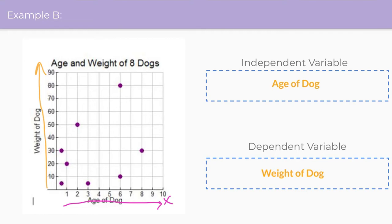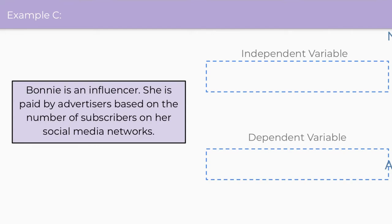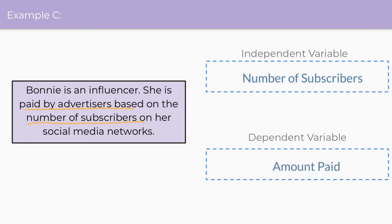In example C, we have a relation in words: Bonnie is an influencer who is paid by advertisers based on the number of subscribers on her social media networks. We need to determine the independent and dependent variable. Without a table or graph, we need to read the problem and determine which thing is being affected and which is doing the affecting. The two things are number of subscribers and being paid by advertisers. Based on the number of subscribers, she gets paid more money, so the independent variable is the number of subscribers, and the dependent variable is the amount she gets paid.